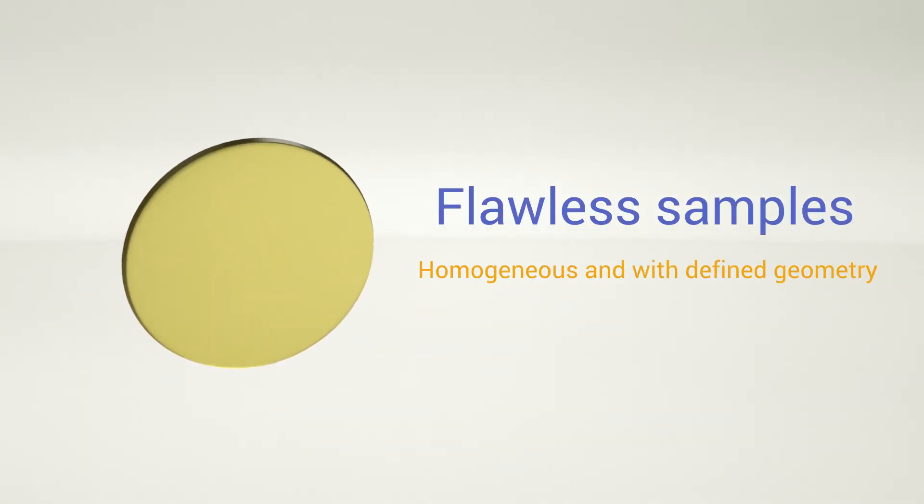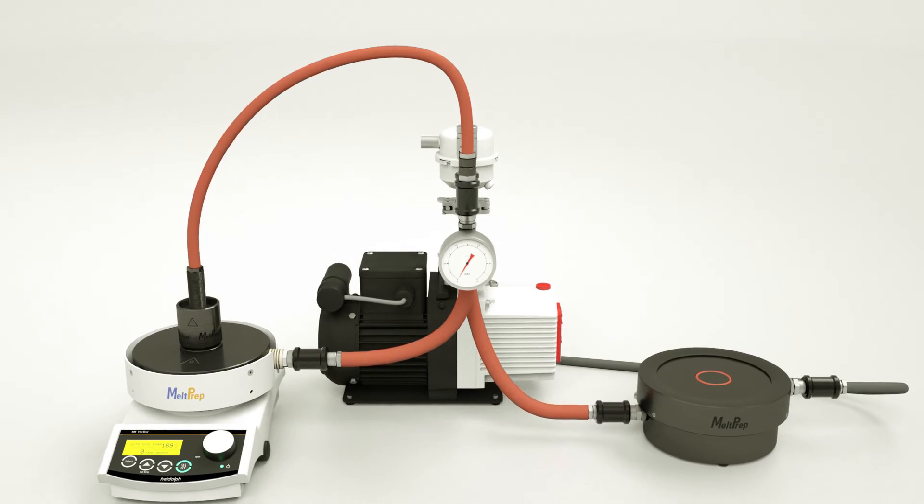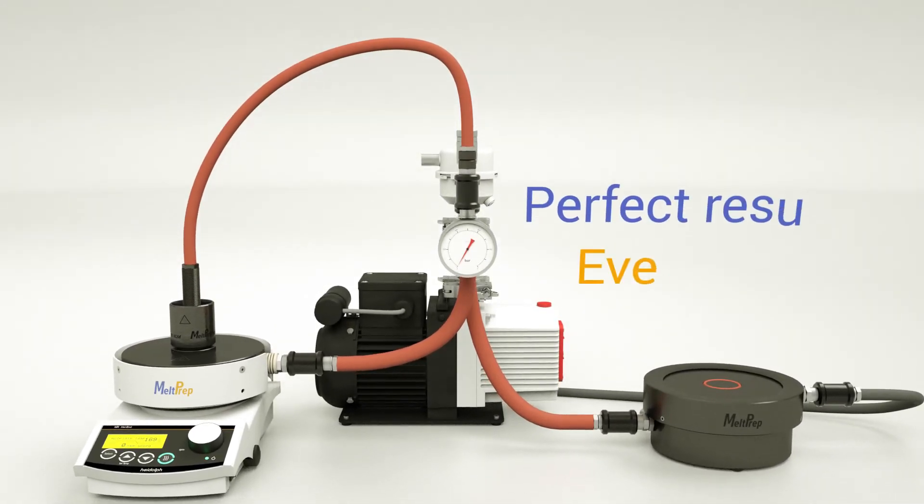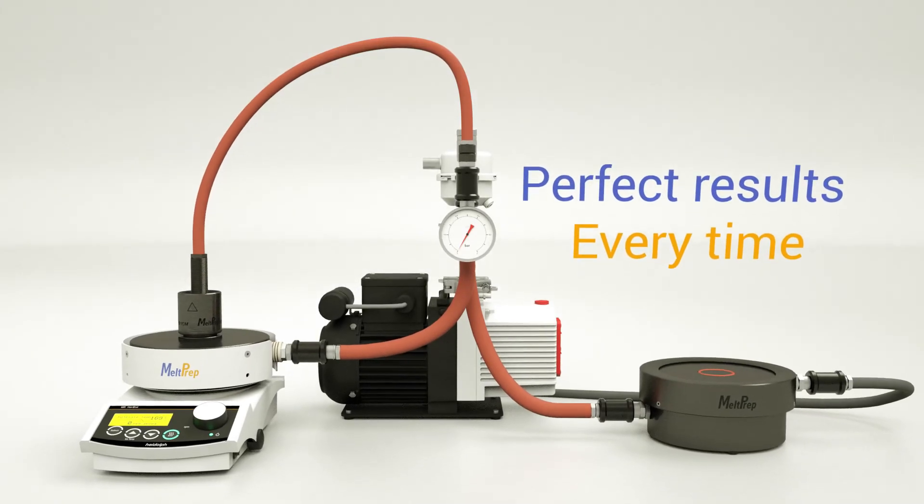The result is a homogenous sample with a precisely defined geometry, produced in about 10 minutes. Traditional molding methods usually demand more than an hour of your time. Meltprep VCM delivers perfect results in minutes, every time.